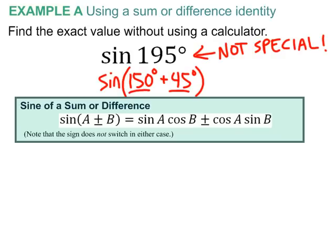And then when I look at this formula, I realize that a plus here means I need a plus over here. So let's just plug in. 150 degrees represents A, 45 degrees represents B, and therefore,